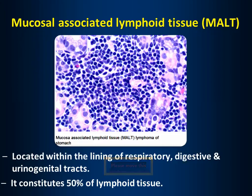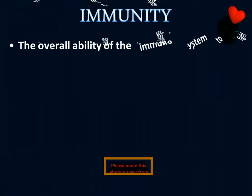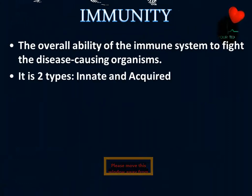MALT constitutes 50% of lymphoid tissue — that was a question in a previous examination. Mucosa Associated Lymphoid Tissue can be seen in the respiratory tract, digestive tract, and urogenital tract. Particularly in the small intestine it is called Peyer's patches, but the general term is MALT. Remember: MALT occupies 50% of lymphoid tissue.